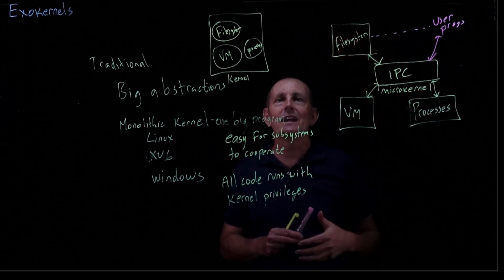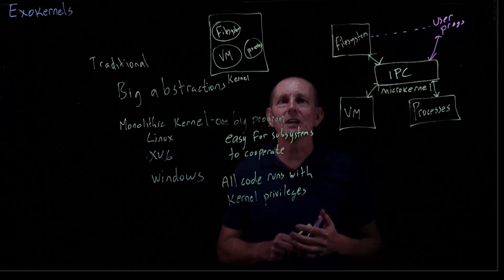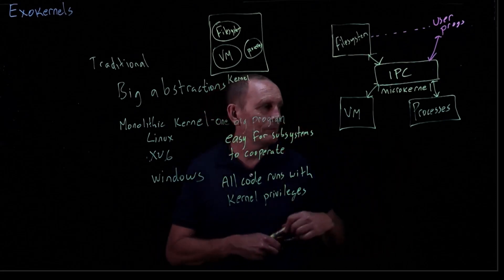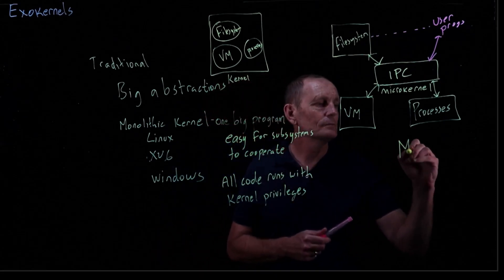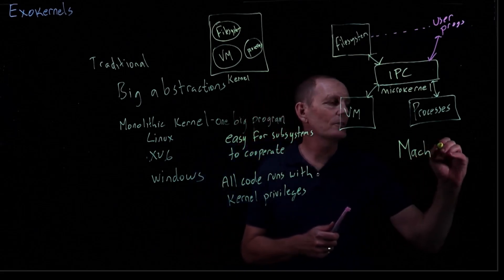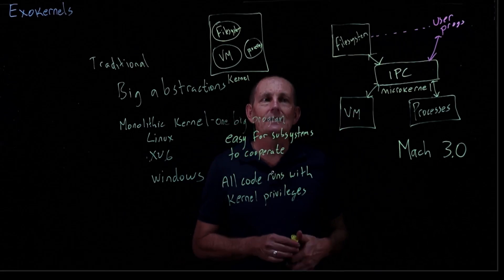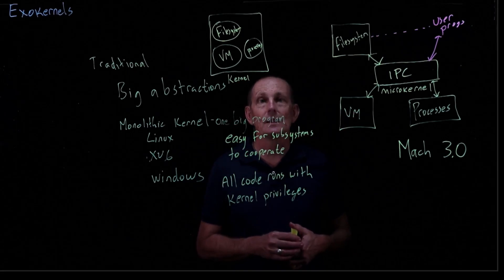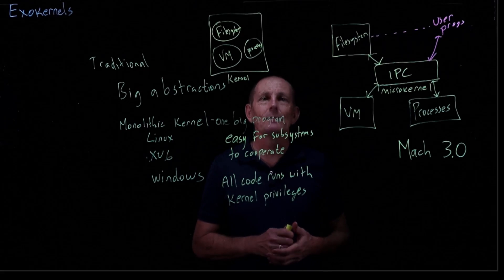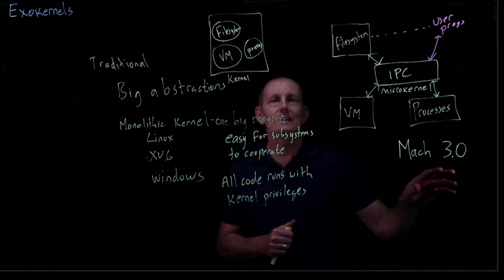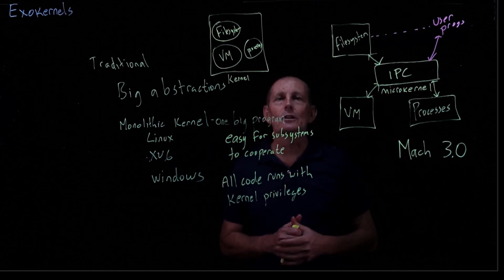These services are smaller and easier to replace and customize, is the thought. So an example of this type of kernel is Mach. This was developed in the 90s at Carnegie Mellon University. It was used as the basis for NeXT's operating system in the 90s, which eventually became Mac OS, Mac OS 10, when Apple acquired NeXT. And so today, in fact, the Mac OS is built on top of this microkernel approach.